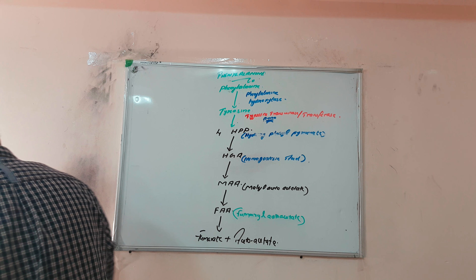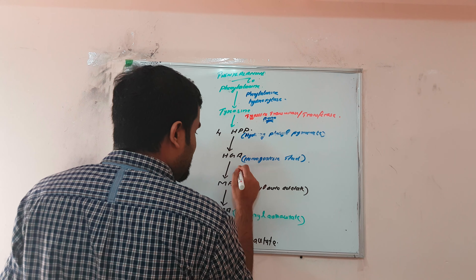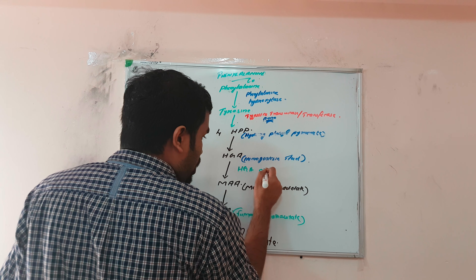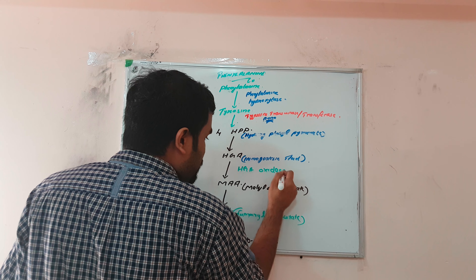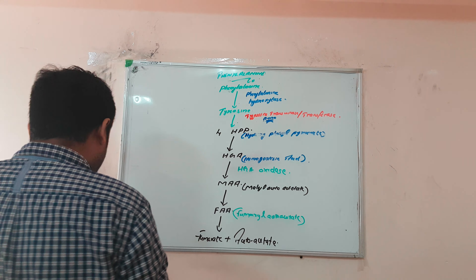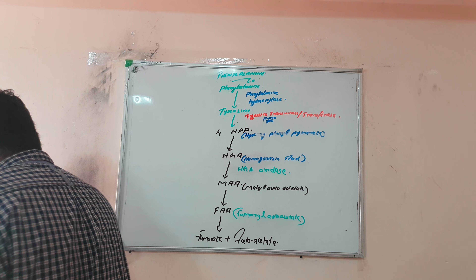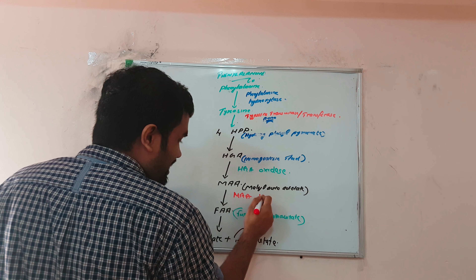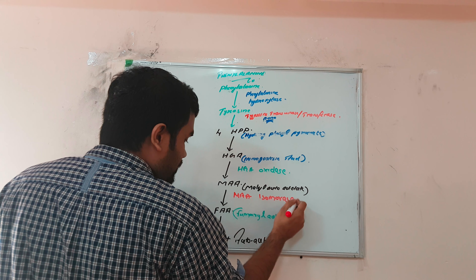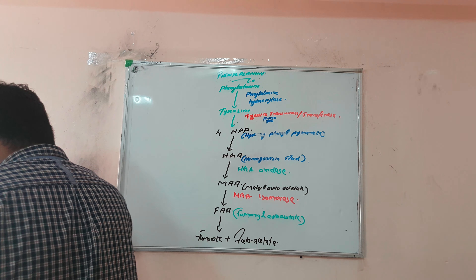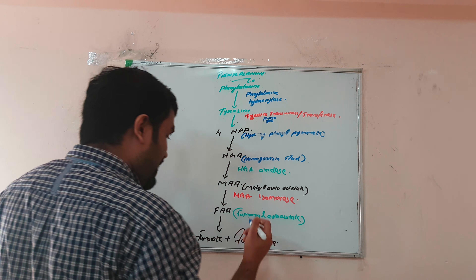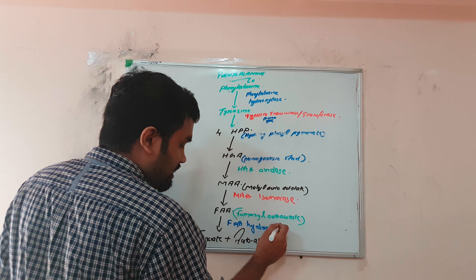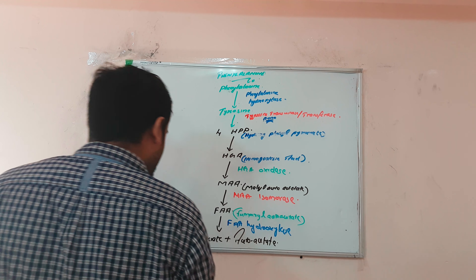4HPP is converted to HGA — you don't need to remember that enzyme. Then HGA becomes MAA by HGA oxidase. Then MAA becomes FAA by MAA isomerase — mother becomes father, right? Finally, fumarylacetoacetate becomes fumarate and acetoacetate by fumarylacetoacetate hydroxylase.